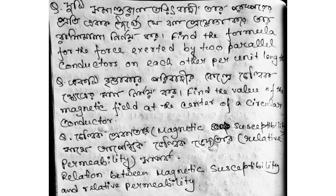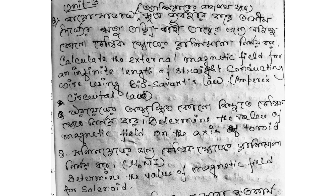The third one is the magnetic susceptibility and its relation with relative permeability. The next question is about Biot-Savart law — it has been used as an important topic. We also have to calculate the external magnetic field for an infinite length of straight conducting wire using Biot-Savart's law.